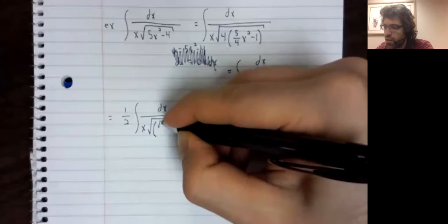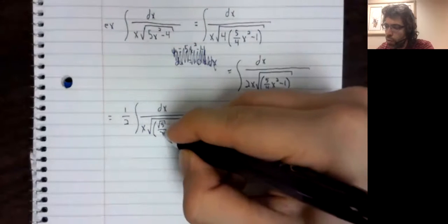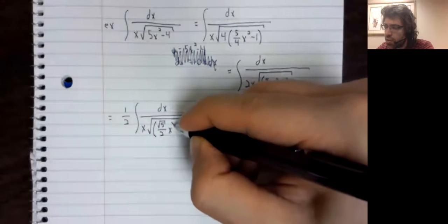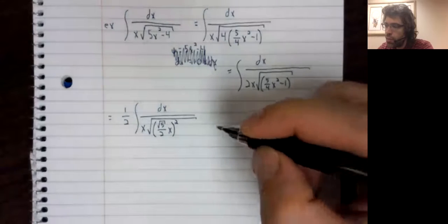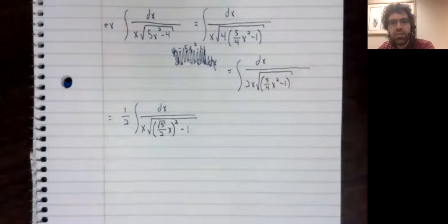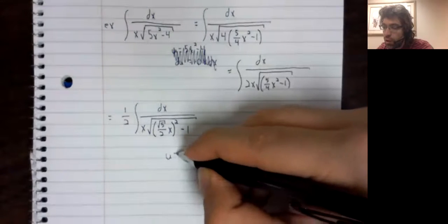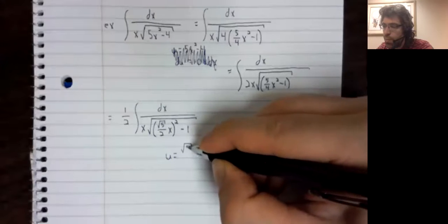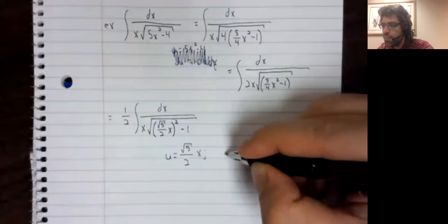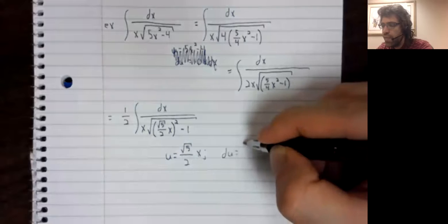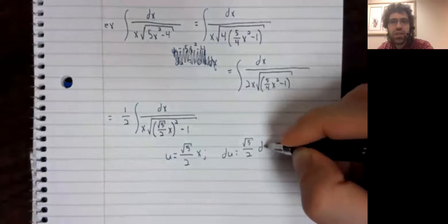We need a square here. So we can rewrite this as the square root of five over the square root of four times x, that whole product squared. We have the minus one that we want. We do the inevitable: u equals the square root of five over two x. Then du equals the square root of five over two dx.